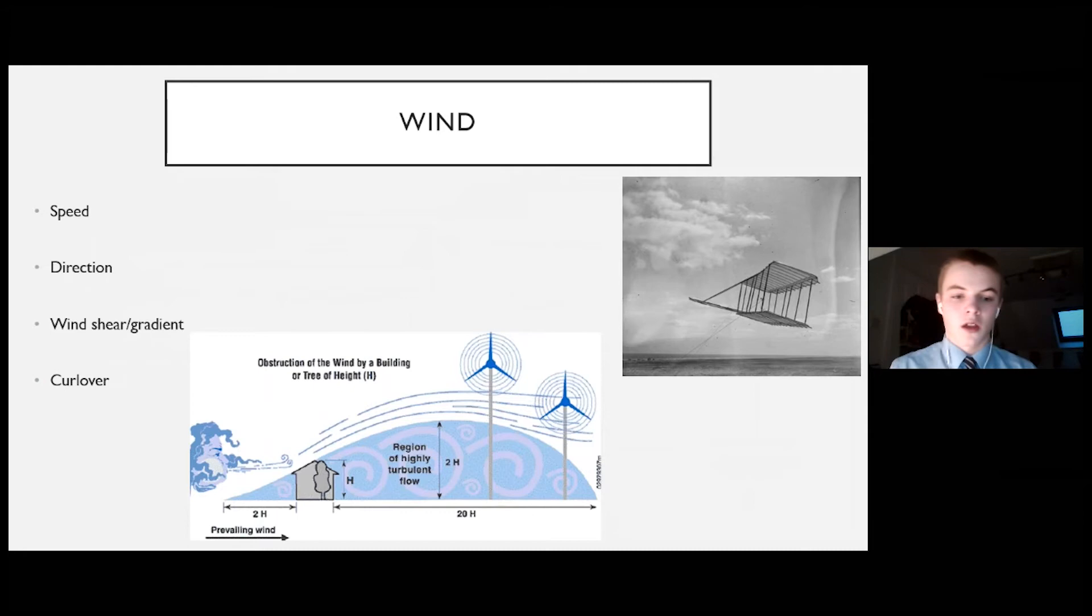And finally, the most dangerous of them is curl over. Curl over occurs when wind blows over an obstacle and it spirals behind it. In the diagram at the bottom you can see that this spiralling occurs for about 20 times the height of the object in distance behind it, and this is a huge amount, especially when considering that these obstacles are usually hangars. At Upavon, when coming in to land on certain days, we land close to the hangars, and there's often curl over. But we've learned to overcome this using a higher approach speed, so we can get through this area quicker, and also using air brakes to stabilise the approach. But it's still extremely dangerous, and pilots must learn about curl over before they fly.